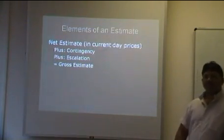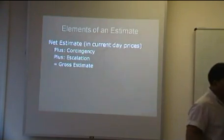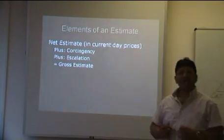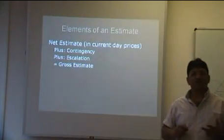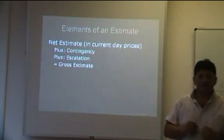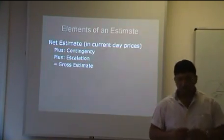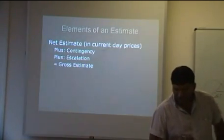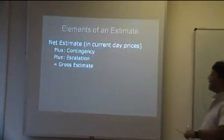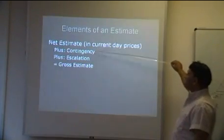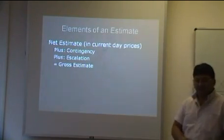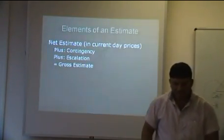Elements of an estimate. So what does an estimate consist of? If you look at the presentation, your net estimate in current day prices—it can be dollars, it can be euros, it can be yen, it can be pound, it can be rand, whatever currency value you've got. The net estimate is made up of the contingency and the escalation, which will then give you your gross estimate. So in essence, what we basically say...